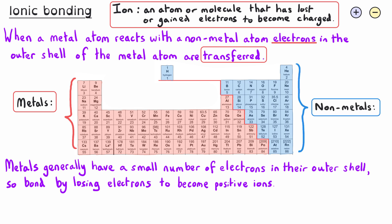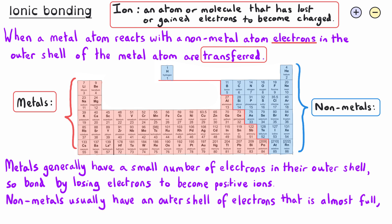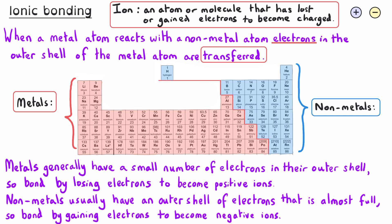Non-metals, which are found on the top and right-hand side of the periodic table, have an outer shell of electrons that is almost full. So they form bonds to fill their outer shell by gaining negative electrons, and so they become negatively charged non-metal ions.